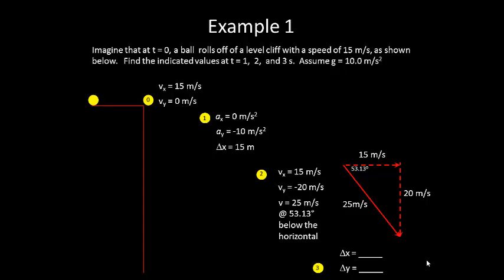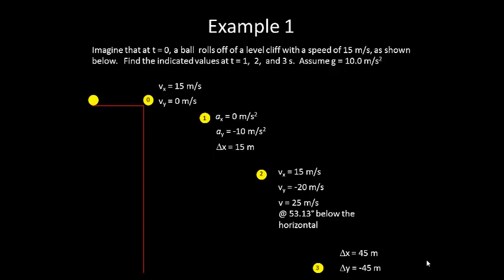Now let's consider the x position, the x displacement, and the y displacement after 3 seconds. In the x direction, we've gone 15 meters per second for 3 seconds. So our total distance or displacement in the x direction would be 45 meters.